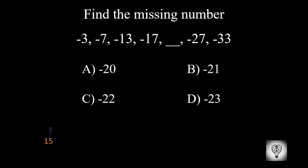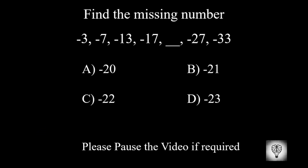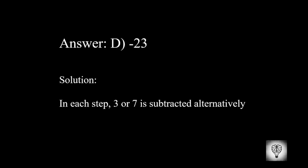Find the missing number. Please pause the video if required. The correct answer is minus 23. In this sequence, in each step, either 3 or 7 is subtracted alternatively.